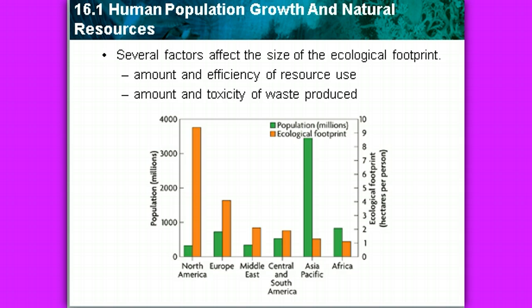There are several factors that affect the size of an ecological footprint. The amount and efficiency of resource use — there might be a lot available, but if we're constantly using it, that resource is going to become limited. The amount and toxicity of the waste produced also matters. If you use something and pour the remainder down the drain creating high toxicity, that substance sometimes can't be removed from the water supply, so it builds up with every person that uses it.